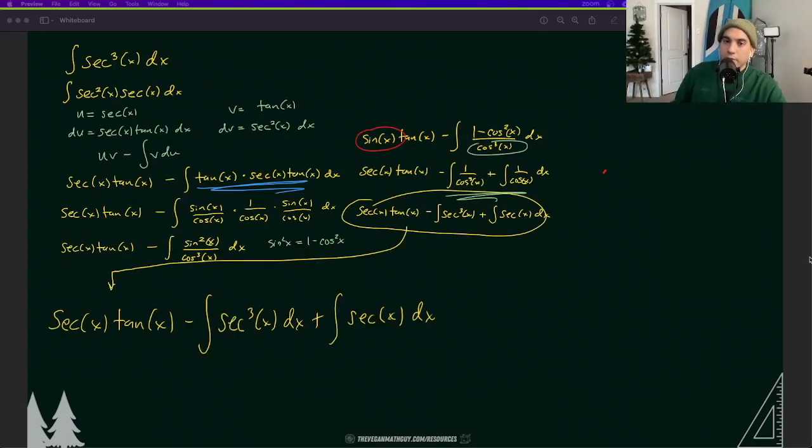Now we only have two integrals to solve for. This last one we should be familiar with. We're still stuck with this secant cubed x, which is what we have in the very beginning. I'm going to make this equal to secant cubed x dx because that's exactly what it is, and add that integral on the left side to the right.